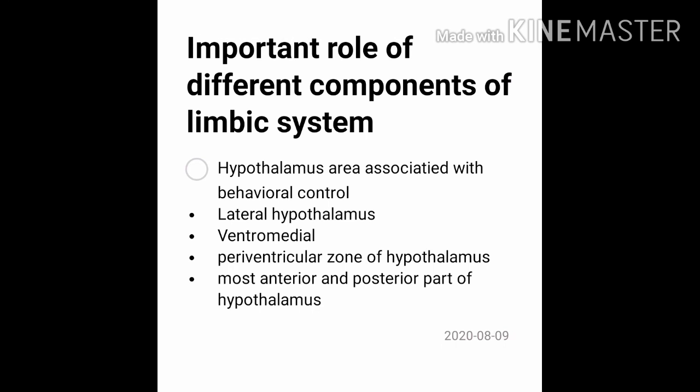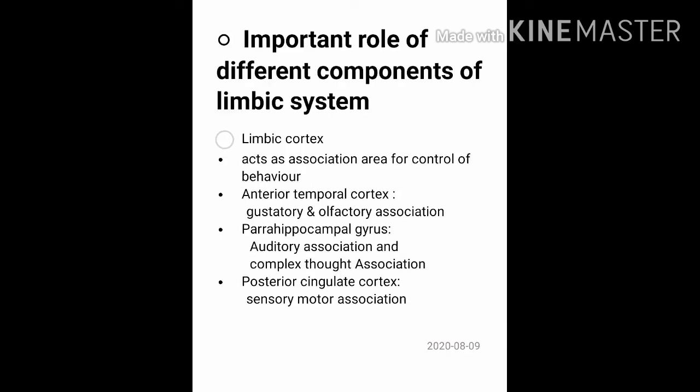The hypothalamic areas associated with behavior control: the lateral hypothalamus acts as a reward center and is responsible for thirst and hunger. The ventromedial nucleus is the satiety center and reward center. The periventricular zone is the punishment center. The most anterior and most posterior parts regulate sexual behavior in males and females. The limbic cortex acts as an association area for behavior control: the anterior temporal cortex handles olfactory association, the parahippocampal gyrus handles auditory association and complex thought association, and the posterior cingulate cortex handles sensorimotor association.